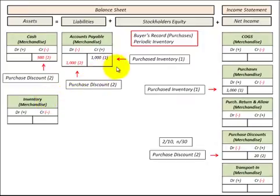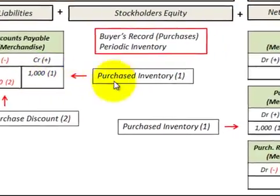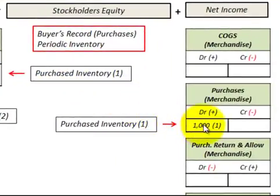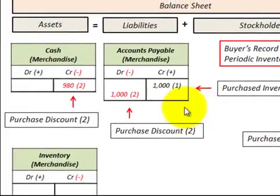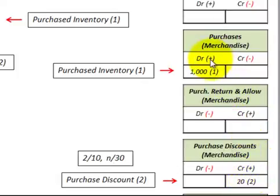Let's say we record it as purchases directly to the income statement. We make a purchase of inventory on account for $1,000, so we increase our purchases account. When we come to pay off that $1,000, we reduce accounts payable and take a purchase discount of 2%, so we increase purchase discounts by $20, which directly reduces our purchases account.